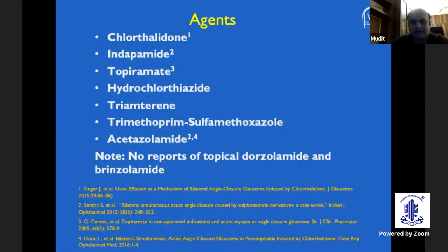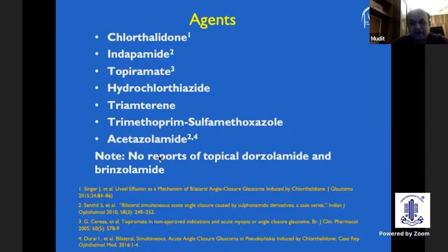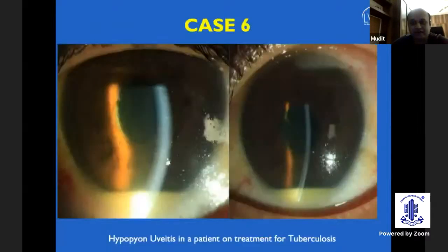These are some common drugs known to cause uveitis: chlorthalidone, topiramate, hydrochlorothiazide, trimethoprim-sulfamethoxazole, and diamox. If a patient presents with bilateral uveitis, angle closure, and peripheral choroidal detachments, keep in mind that this might be a presentation of drug-induced uveitis.